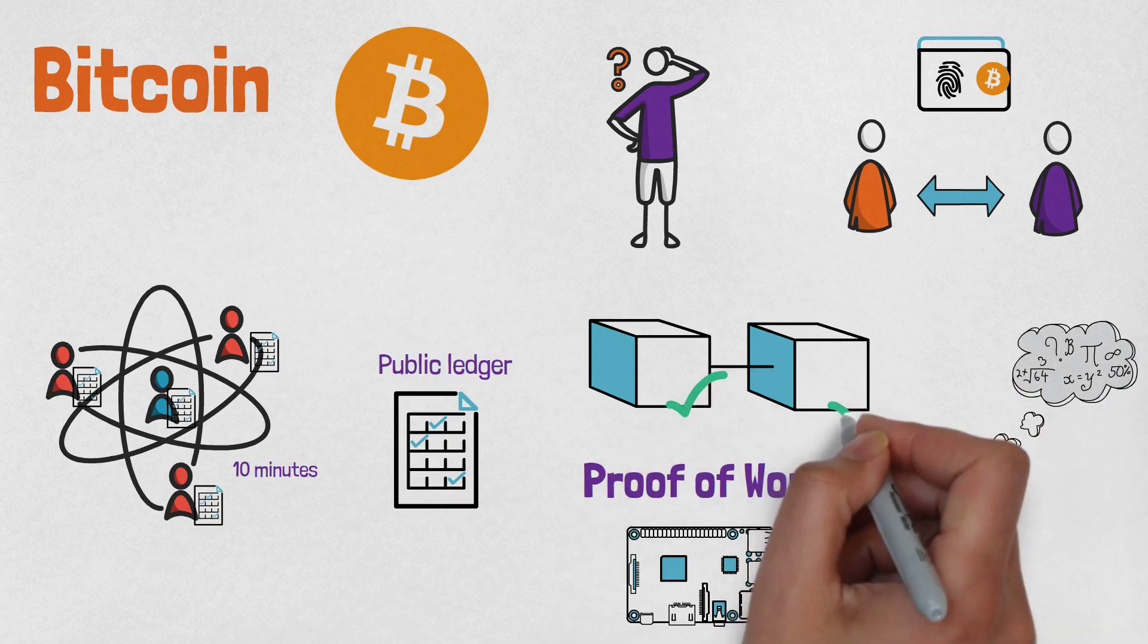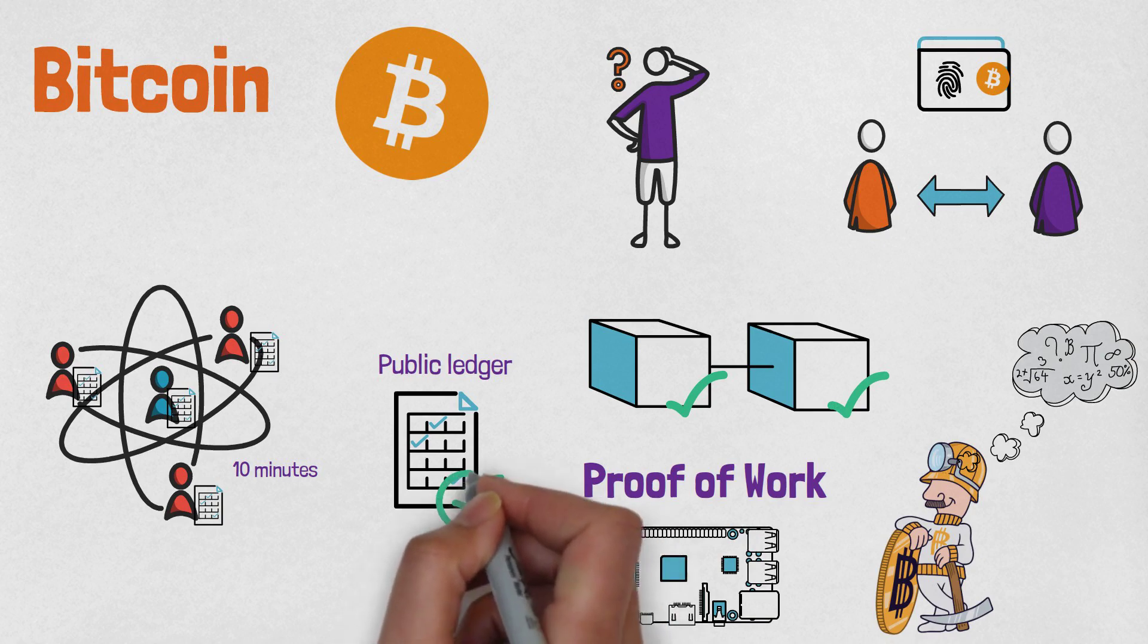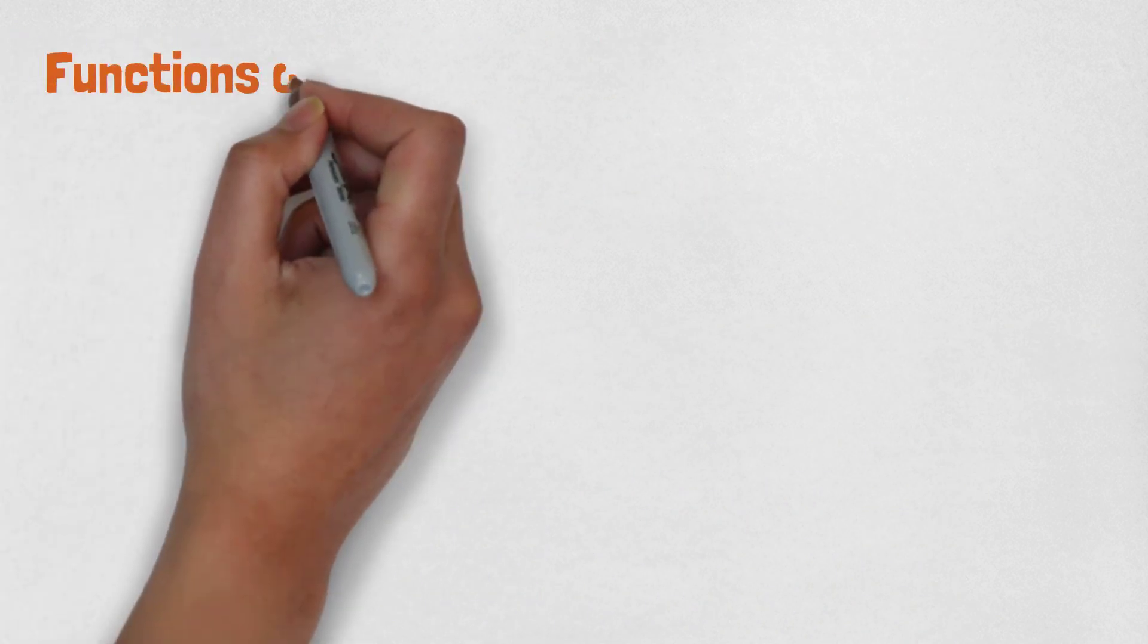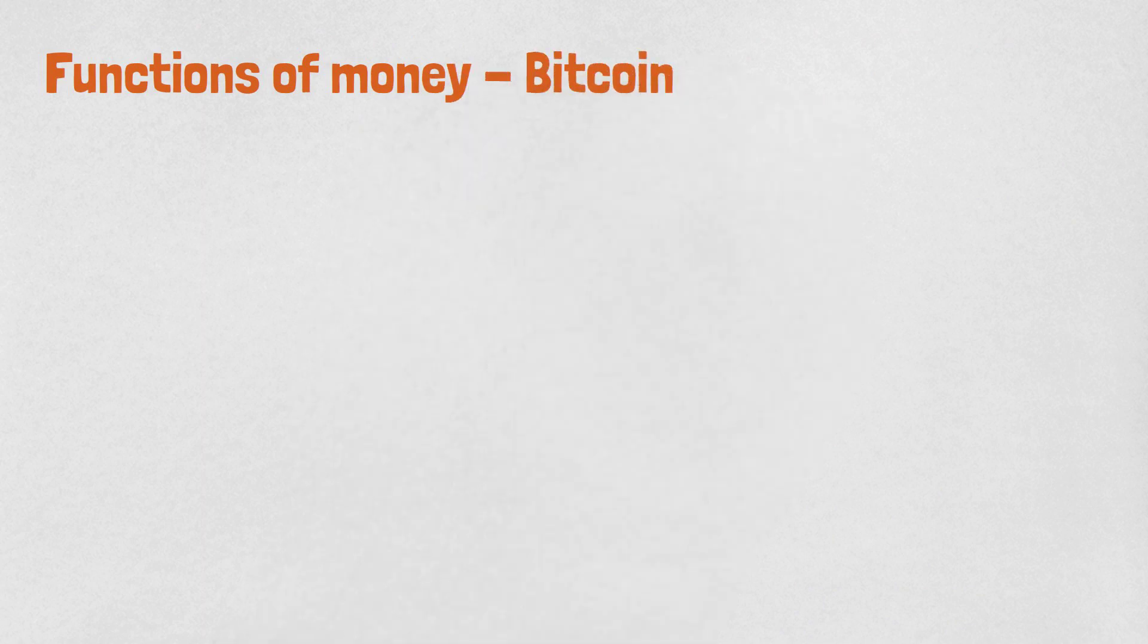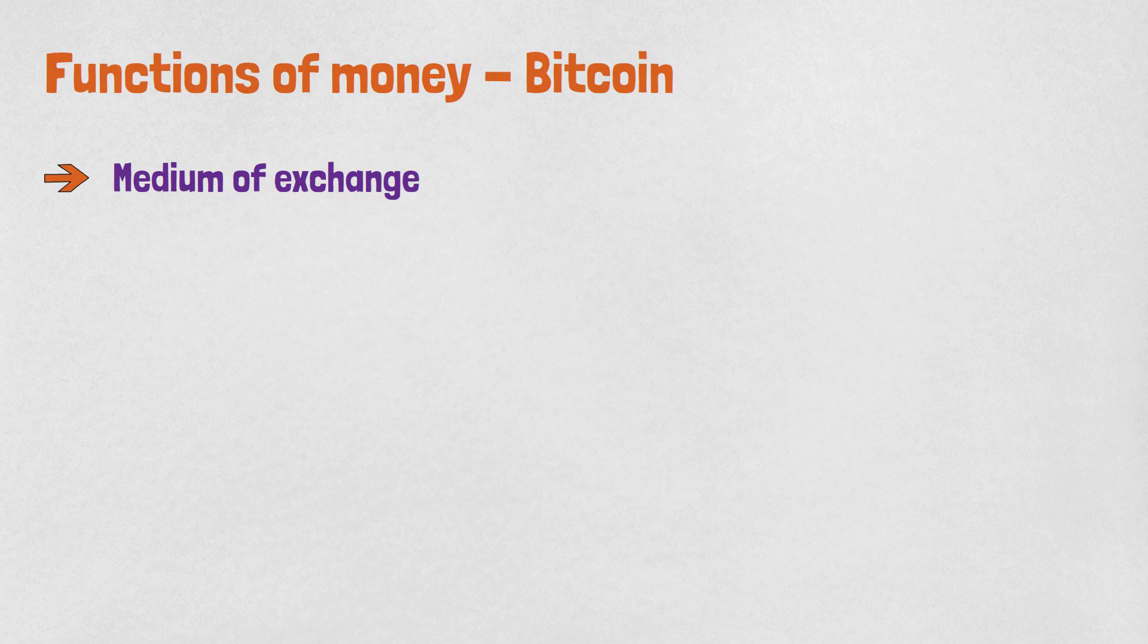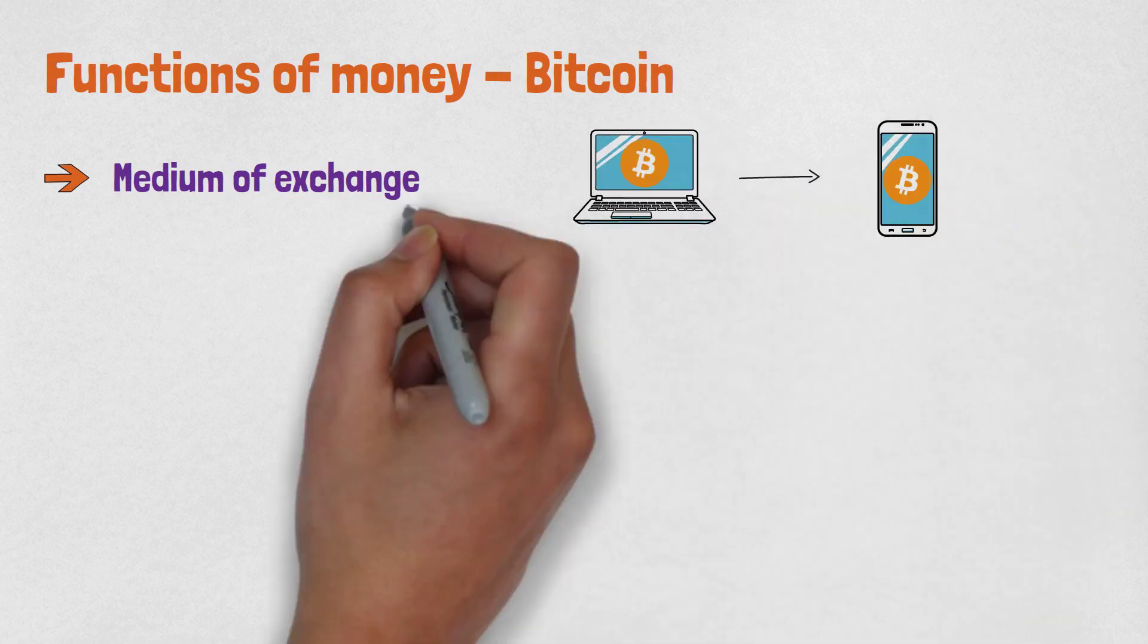After the block is verified, it is added to the ledger of all network participants and the transaction is completed. So, where does Bitcoin stand when it comes to the three functions of money? It can easily be concluded that Bitcoin is a medium of exchange. Bitcoin's transactions are made online in a matter of seconds and can be adopted very quickly by every individual.